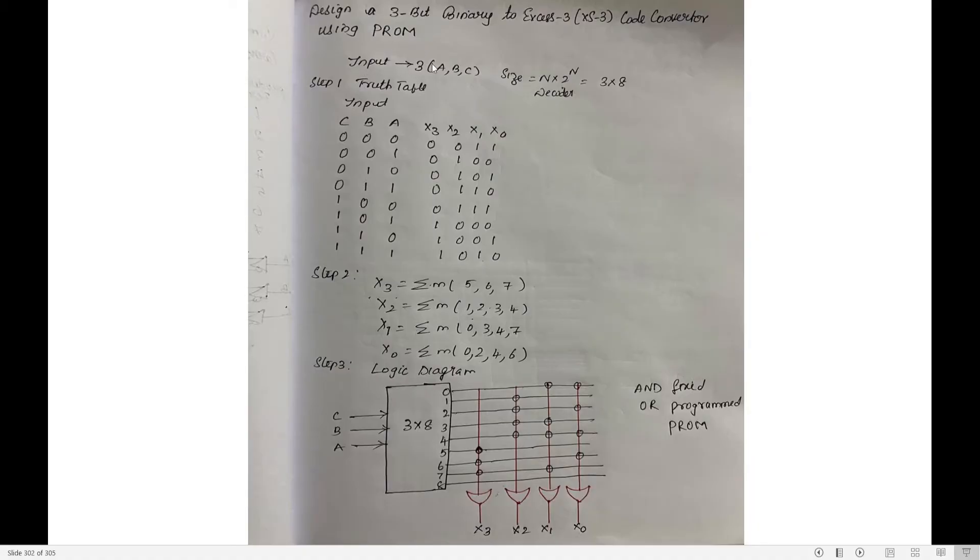Good morning, students. Let us look into the next topic: designing a 3-bit binary to XS3 code converter using PROM. Since it is 3-bit, the input is 3 bits — that is ABC.